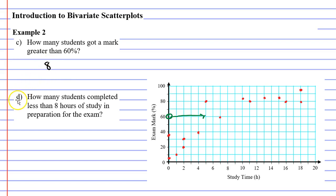Now moving on to question D: how many students completed less than 8 hours of study in preparation for the exam? Eight hours is this point here, and we're looking for students that did less than this, meaning students to the left of that green line. 1, 2, 3, 4, 5, 6, 7, 8 students did less than 8 hours of study.